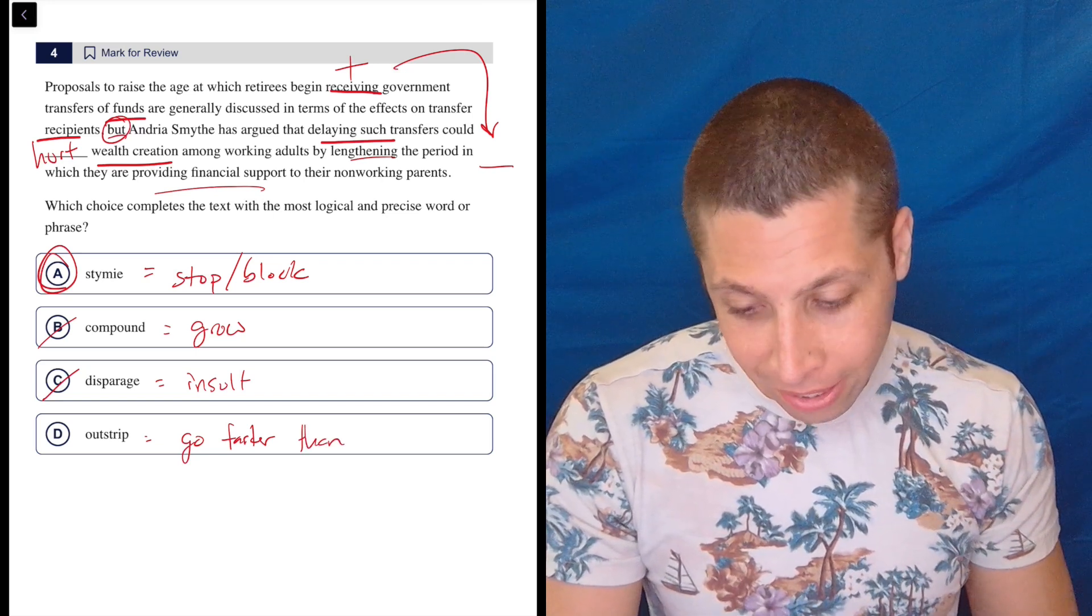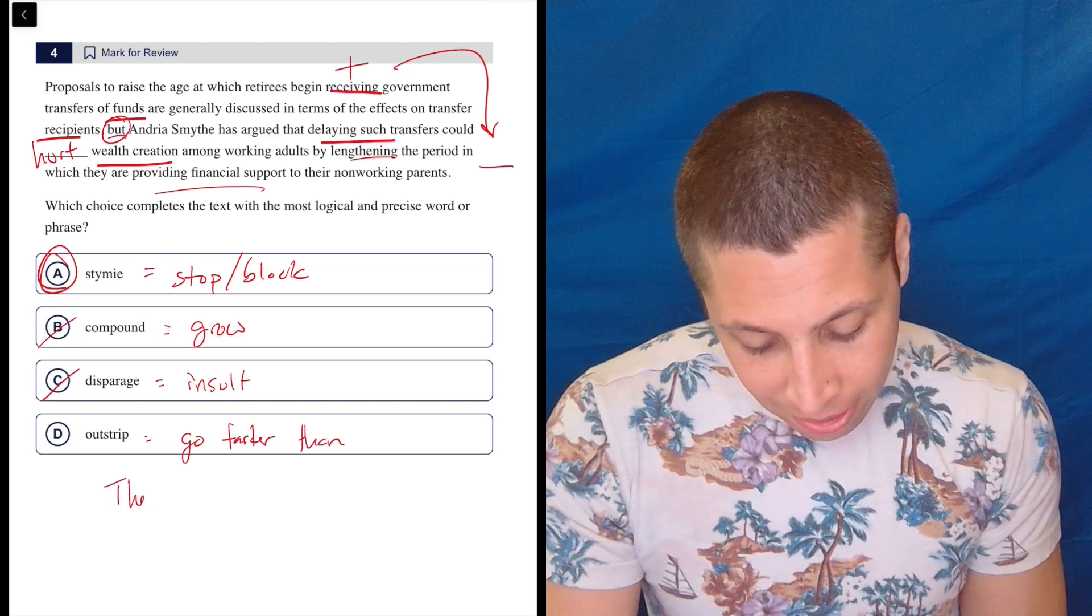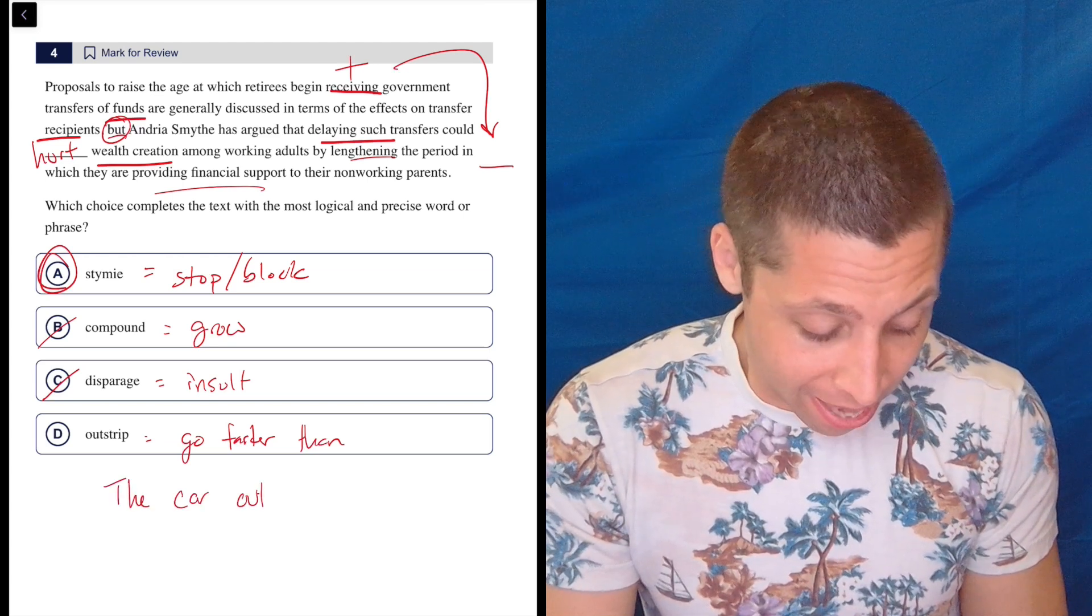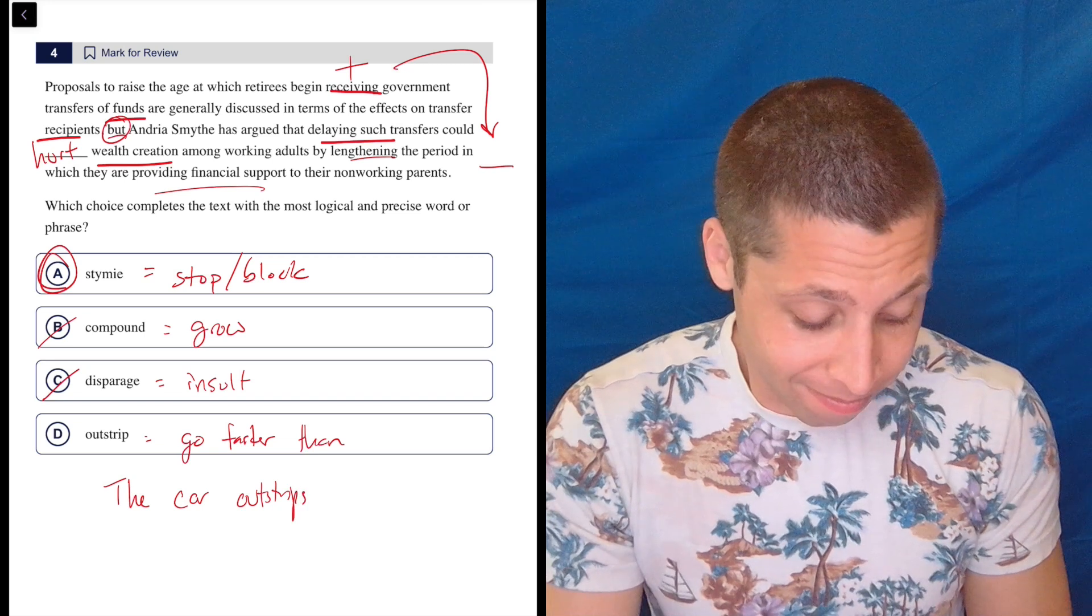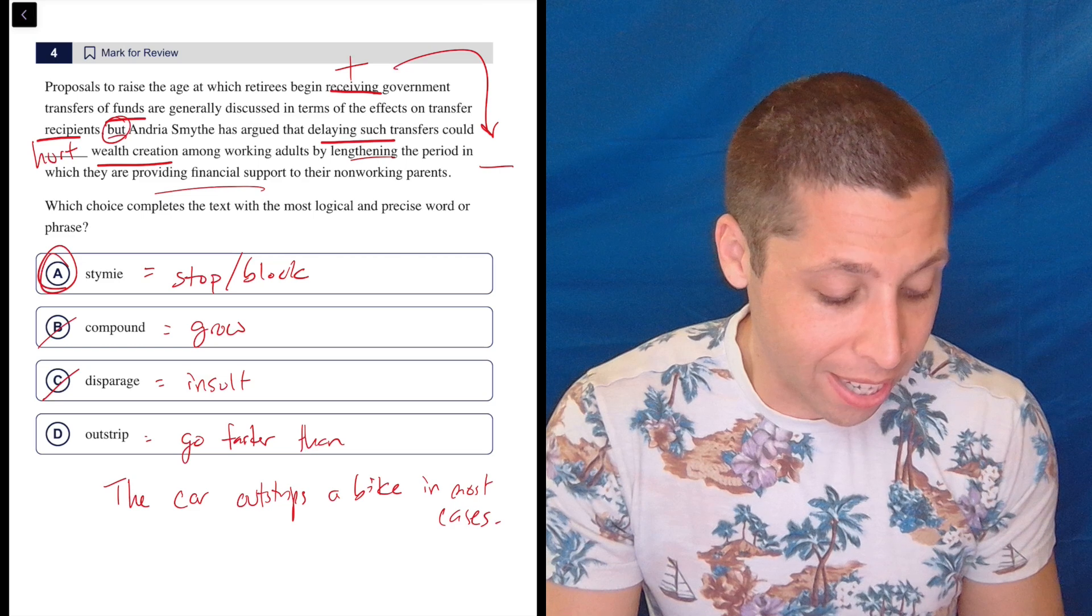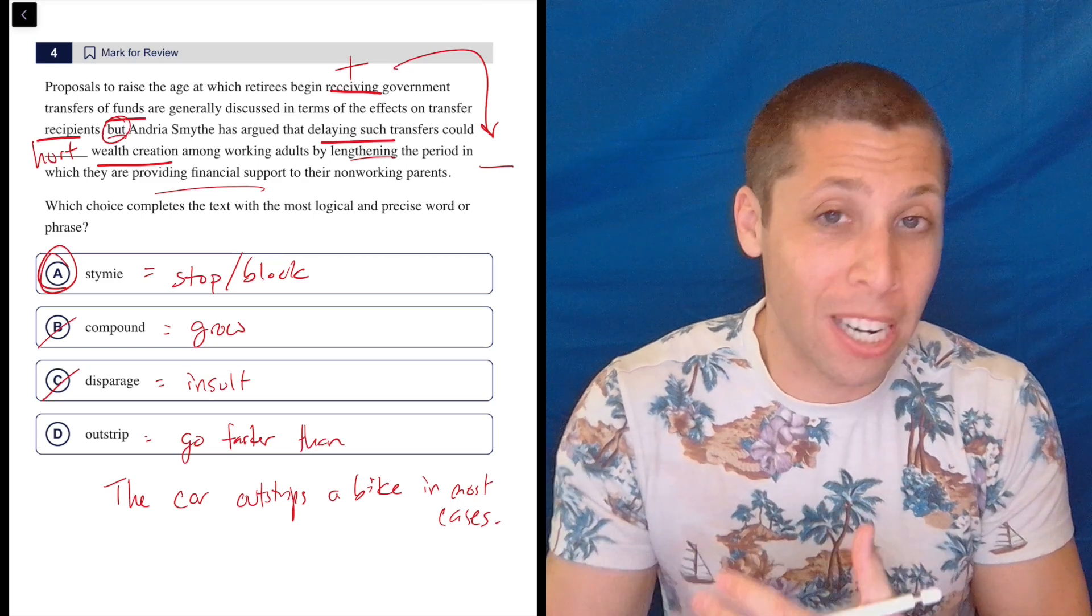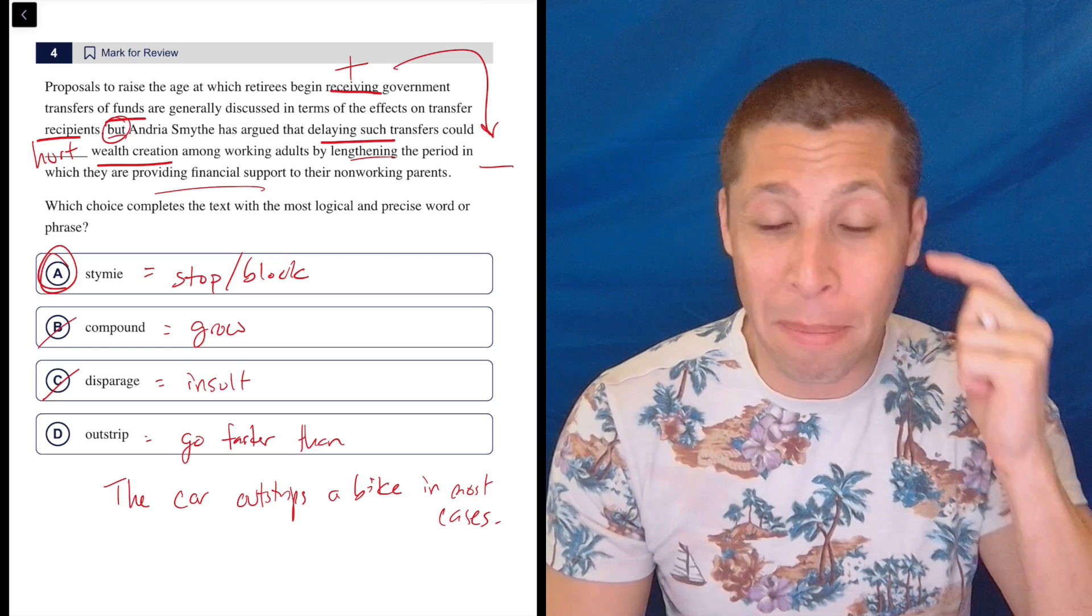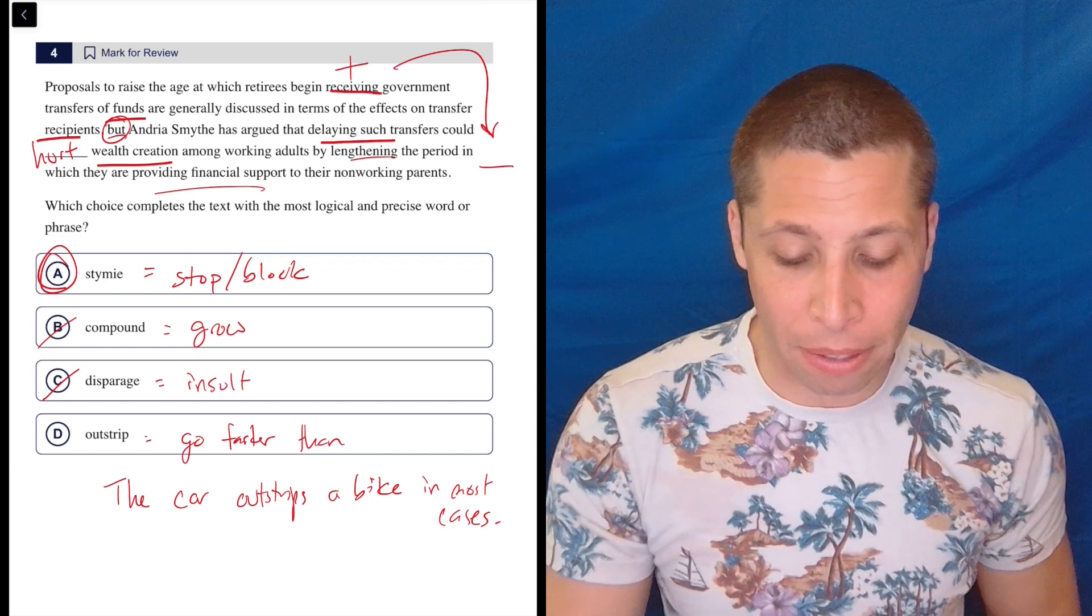So you might say like, the car outstrips a bike in most cases, right? It's going to be faster to be in a car going somewhere than riding a bike going somewhere. That's maybe the best way to kind of get a simple example of that.